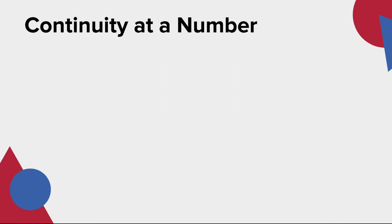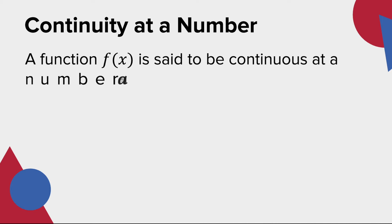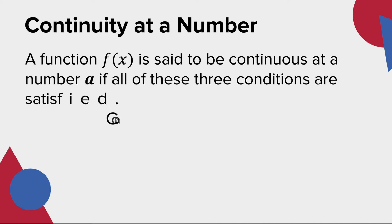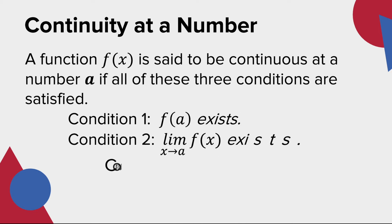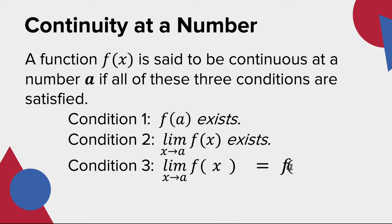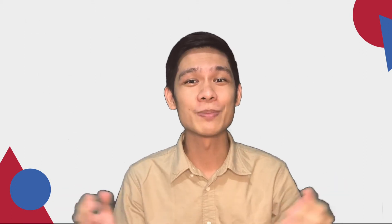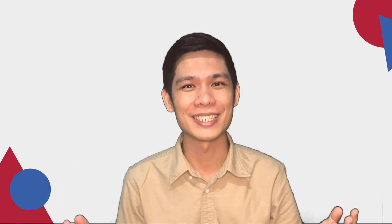So how do we know if a graph is continuous at a number? A function f is said to be continuous at a number a if all of these three conditions are satisfied. Condition 1: f(a) exists. Condition 2: the limit of f as x approaches a exists. And the third condition: the limit of f as x approaches a is equal to f(a). If one or more of these conditions fail, then the function f is discontinuous at a number a. To further explain this concept, let us have some examples.